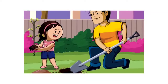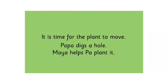Now tell me, what is happening here? What is the father and Maya doing, and where are they? They are in the garden, and the father is digging a hole. Why is he digging a hole? Look at Maya's hand — you can understand. They are going to plant this plant which has come out of the small neem seed in the garden. So they have removed it from the flower pot and they are going to plant it in the garden.